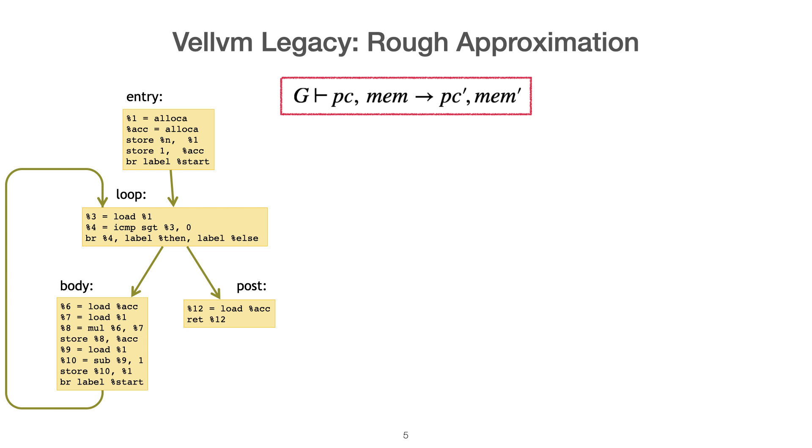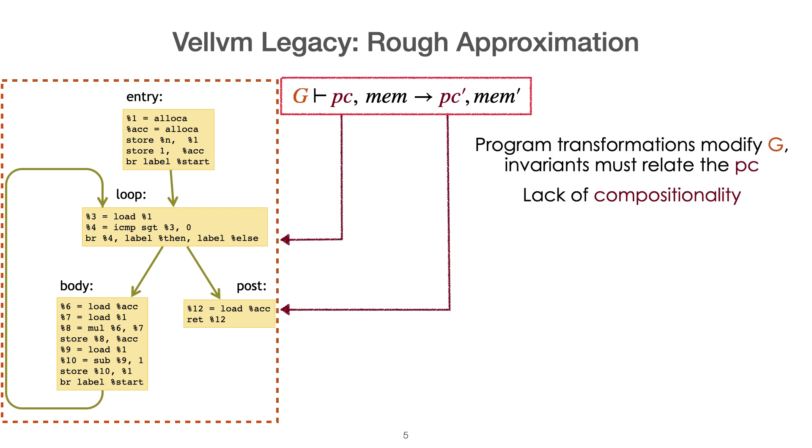So let me give you a very rough approximation as to how the semantics of Vellvm used to be shaped. The idea is to be parametrized by the whole programs with respect to which you are considering the semantics. Let's call it G for graph. And to use program counters to know dynamically where inside of this graph you are currently executing. Of course, you will also thread the memory. The first thing that we don't like with this approach is that if you consider a program transformation, you will of course modify G. You will therefore have to relate two programs with respect to basically two different semantics. And you will have to design invariants that explain how these program counters relate before and after optimization to compensate.